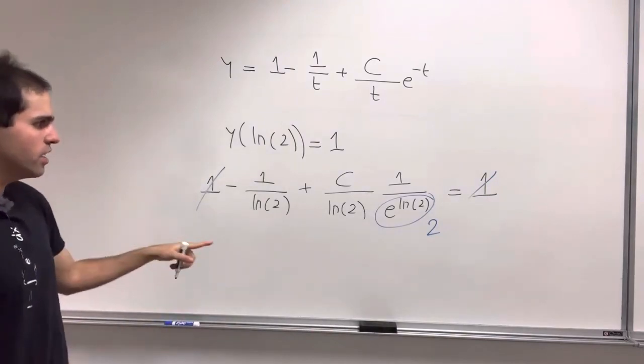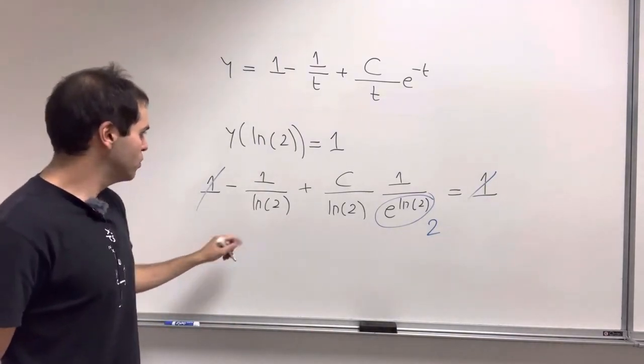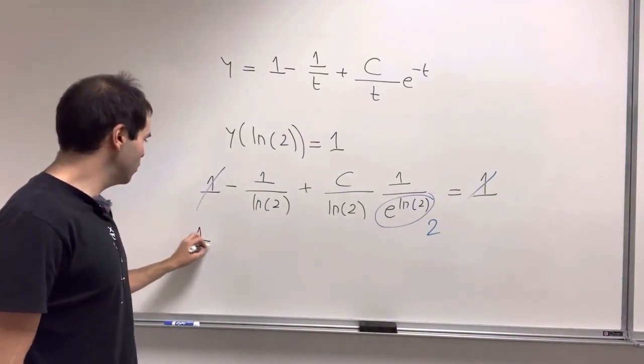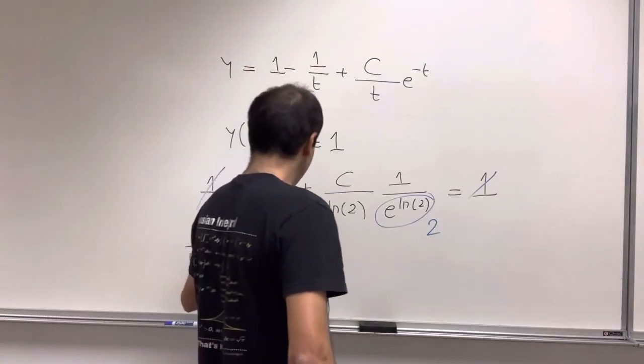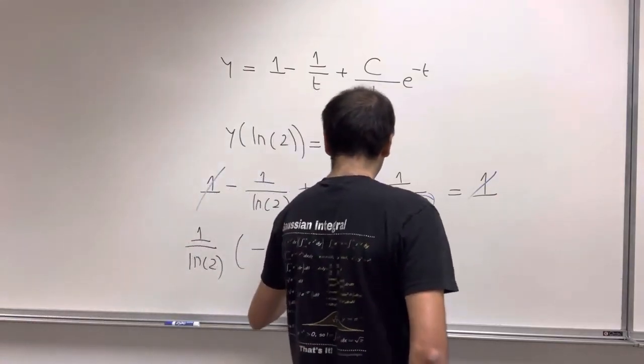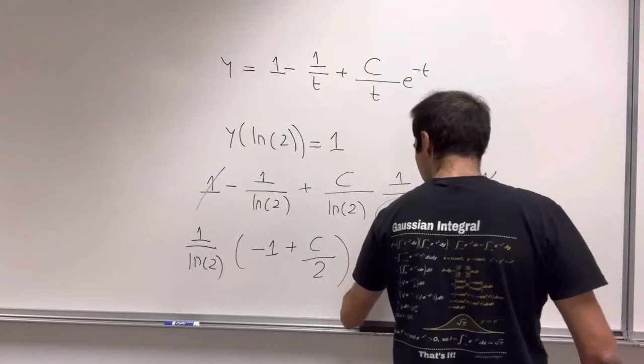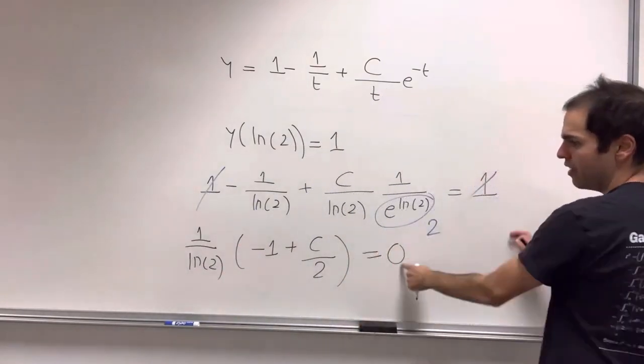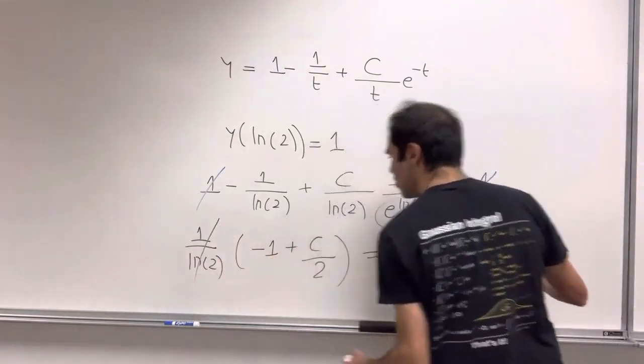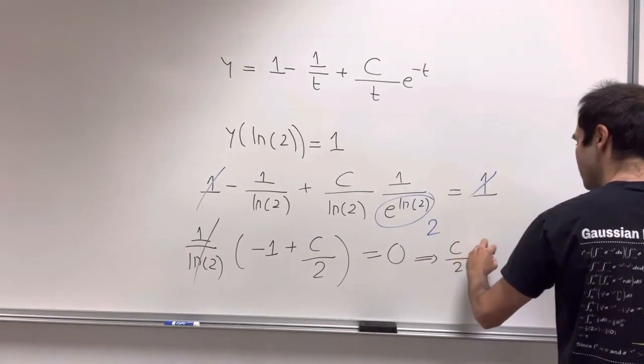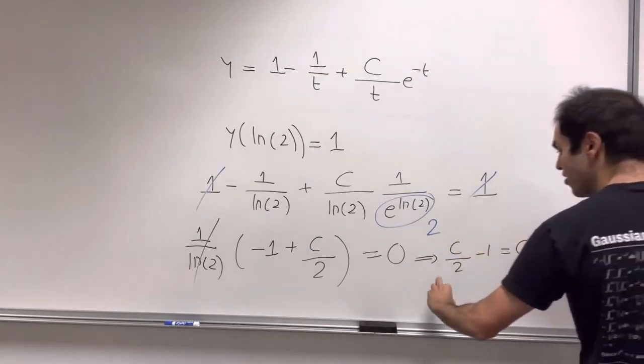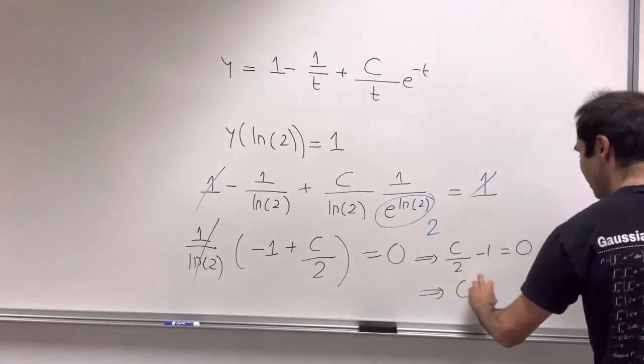And then essentially what we get, let me see, so 1/ln(2) times (-1 + C/2). I think that's what remains, equals 0. But then we can just cancel out this 1/ln(2). And we get C/2 minus 1 equals 0. And you can check this is true if C equals 2.